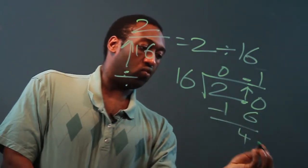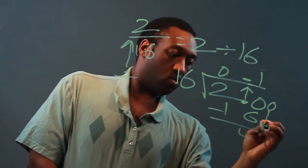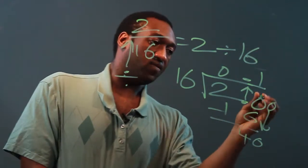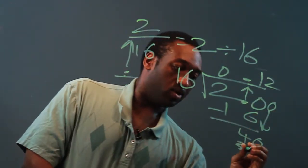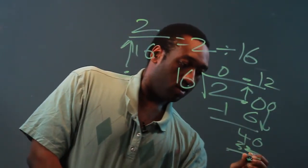Minus 16 is 4. Add another zero. Forty. Sixteenth into 40 is 2, which is 32. Then we get 8.